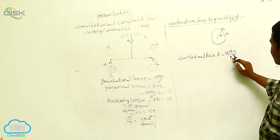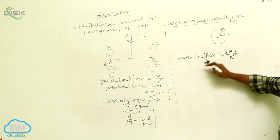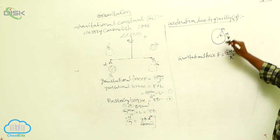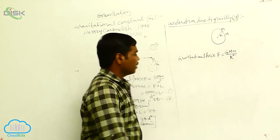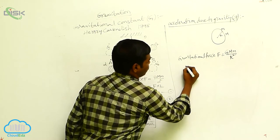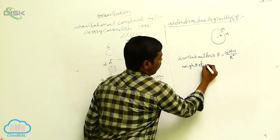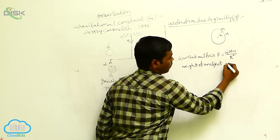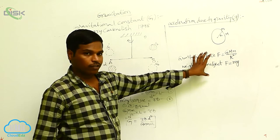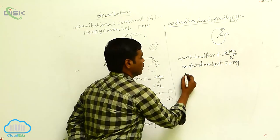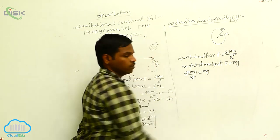Because of the gravitational force acting on small m, this gravitational force is equal to the weight of the object. The weight of the object is F equals m times g. By equating these two equations, we will get G·M·m divided by R squared equals m times g.